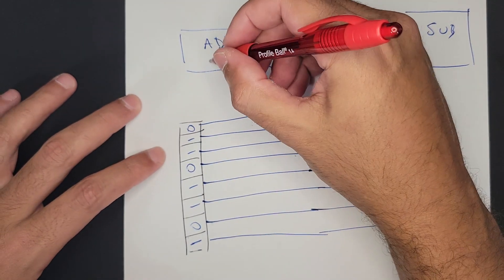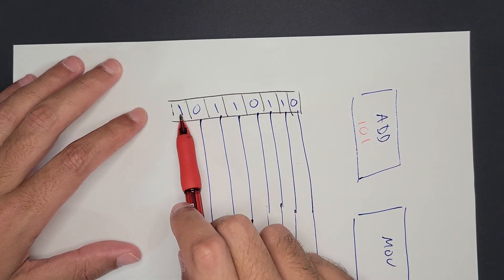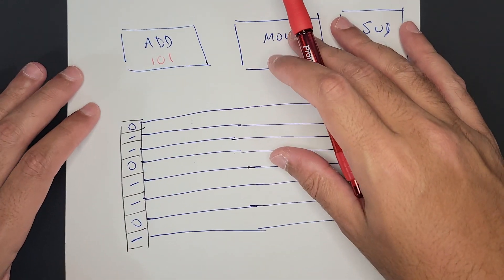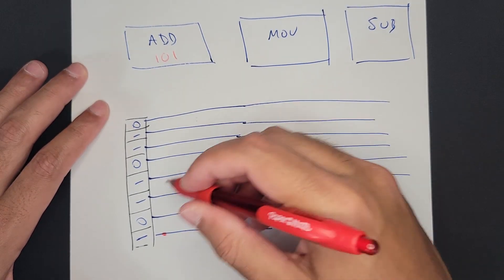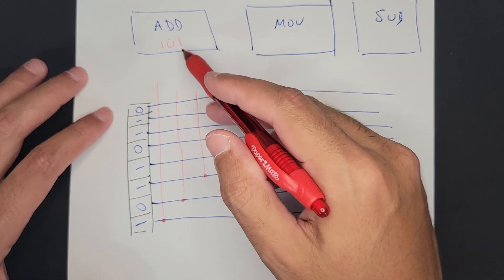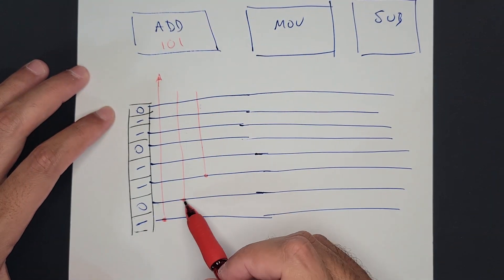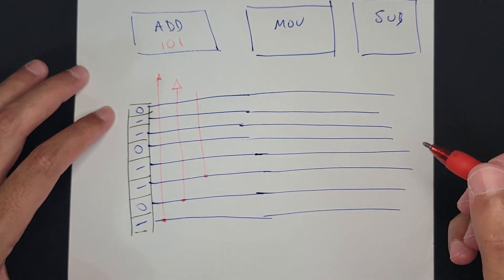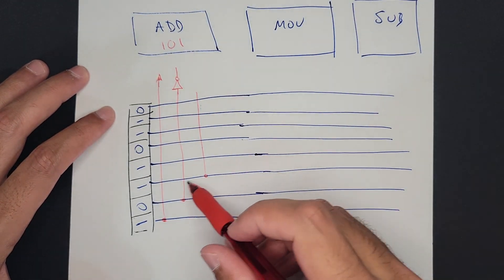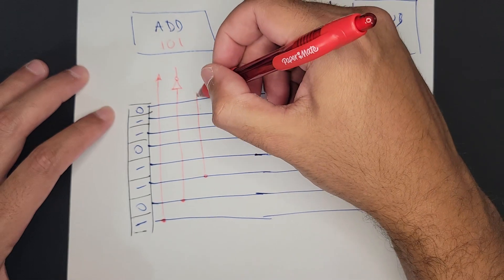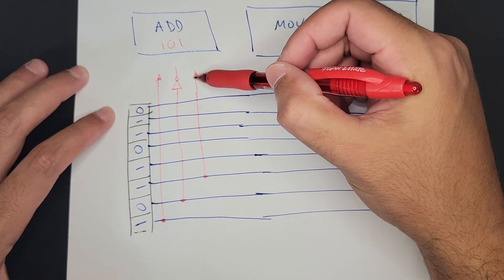Let's say ADD has the opcode 101. So we'll take our instruction — in this case 101 — and this is going to be an ADD instruction. We take all three bits: the first bit needs to be a one, which it is, so that goes straight into a gate. The second bit needs to be a zero, so we're going to invert it. And the third bit we also want to be a one, since we're looking for 101. So we put that into a gate where if this AND this AND this, it registers.